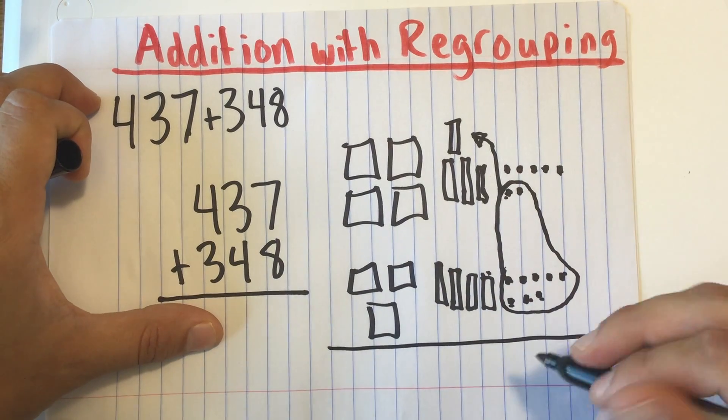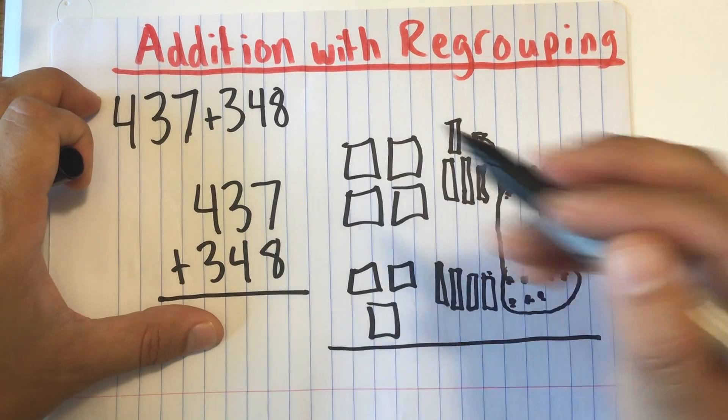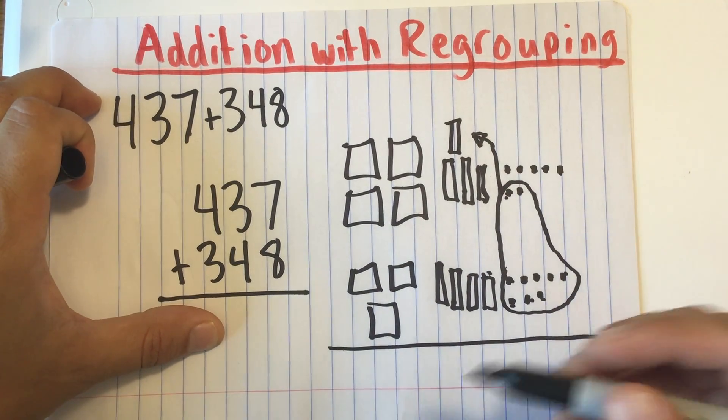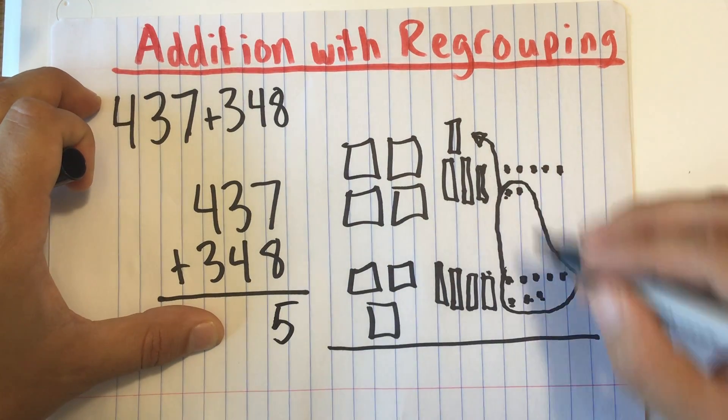Okay? And if we do the same thing over here, 8 and 7 more. So 8, 9, 10, 11, 12, 13, 14, 15. I would put the 5 down here, the 5 that I have left over.